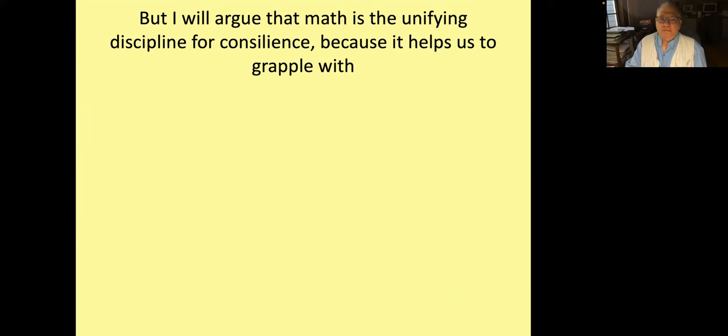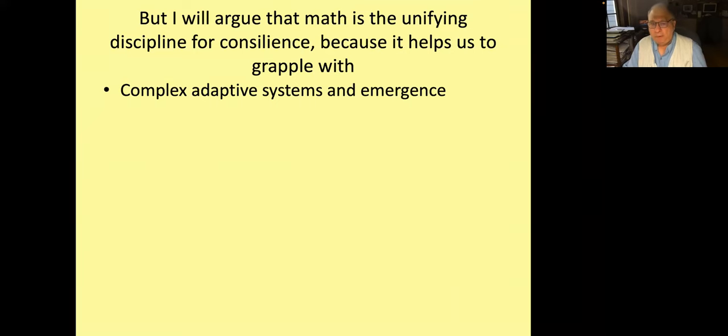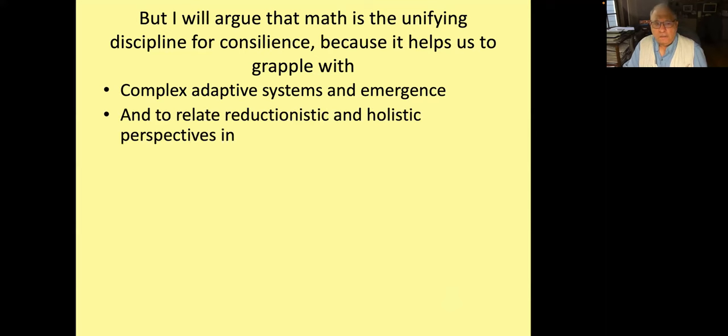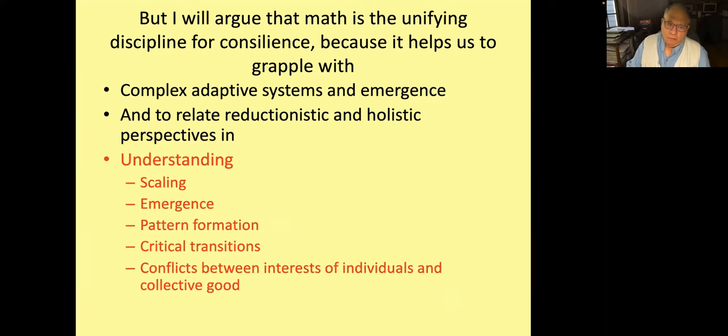I'm going to argue that math is indeed the unifying discipline for Wilson's consilience, because it helps us to grapple with complex adaptive systems and the emergence that Anderson and Jacob were talking about, to relate the reductionistic and holistic perspectives. How do we scale from one level to another, emergence, pattern formation, critical transitions, and conflicts between the interests of individuals and the collective goods? I will touch on all of these things today.